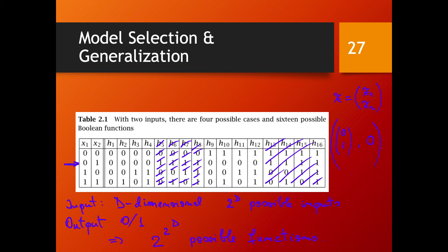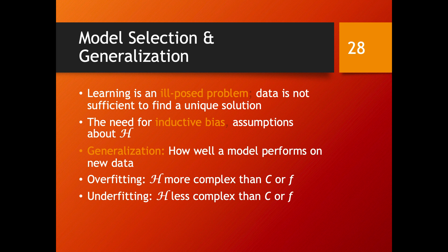Then you look at the next sample and figure out which hypotheses are not consistent with that data point, and so on. The point is that you do have a huge number of possible functions in this case, and certainly even more if you do regression or multiclass classification. To eliminate everything and come out with a unique solution fitting the data is going to be a very difficult problem. That's the concept of learning being an ill-posed problem, because data is never in practice going to be enough to find a unique solution.